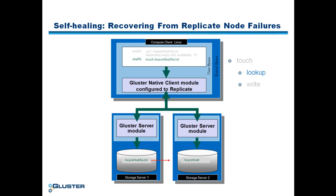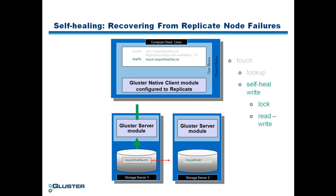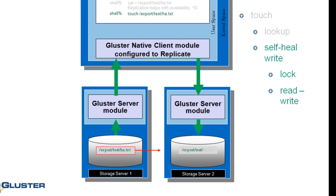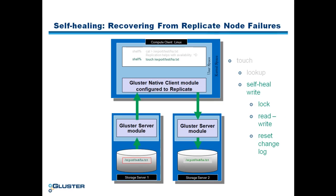Pending operations indicate that some data is out of sync and needs to be self-healed. The standard write operation to update the file metadata will be intercepted and a self-healed write operation will be executed. A lock on the file is obtained. The client reads data from the known good source, writes it to the recovering server, and once complete, will reset the file's pending operation on server 1. The standard write operation will then complete and update the last access time of the file ha.txt.